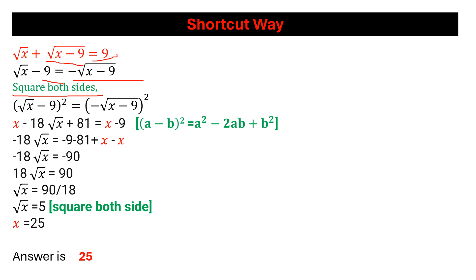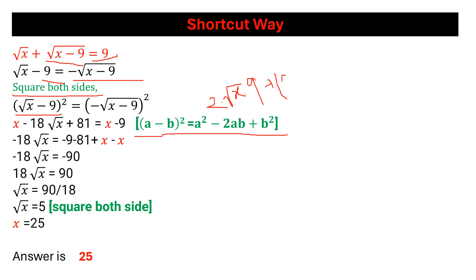Then we will get: root x minus 9, whole square, is equal to root x minus 9, whole square. On the left side we can use the formula (a minus b) whole square — we already know that is a² minus 2ab plus b². So the left side will be x minus 18 root x, because the formula 2ab gives us 2 times a (root x).